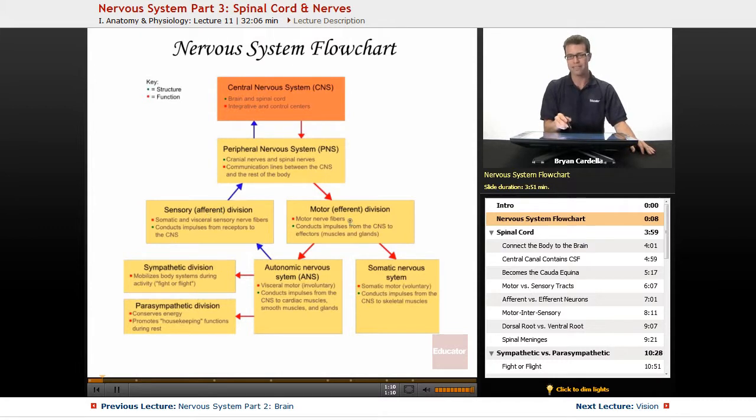The way that I keep the words afferent and efferent straight is I think of it alphabetically in terms of the brain being up top, kind of like the top of the alphabet. And so A has to do with going up to the brain. Afferent is all of these sensory signals. Efferent is going down, going out. And another way you can remember it is that the end goal of an efferent signal is the effector, which starts with the same beginning there. Whatever is being effected, a muscle, a gland, an organ by that motor signal.